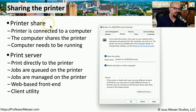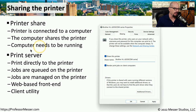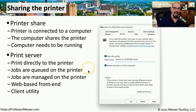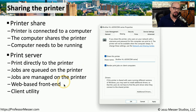One challenge with a printer share on someone's computer is that when they turn that computer off, everyone loses access to the printer. So instead of using a printer share, you might want to use a print server. This is usually software running on the printer itself, which allows people to print directly to the printer without needing a third person's computer in the middle. Jobs are queued directly on the printer, and you can manage, delete, or add any jobs from the management page of the printer itself. There's usually a web-based front end on the printer, or an executable you install in your operating system to manage it through a client.